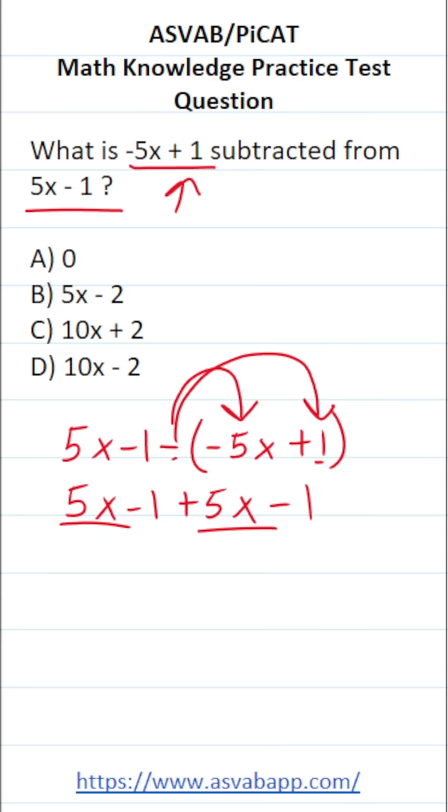So 5x and 5x are like terms. 5x plus 5x is 10x. Negative 1 minus 1 is negative 2. So when we subtract these two polynomials, we get 10x minus 2, which is answer choice D.